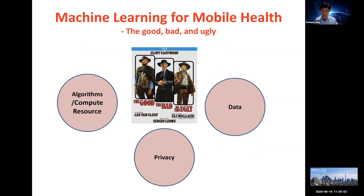Certainly, there has been a lot of work around using machine learning techniques for mobile health, and there has been significant progress in the machine learning field in terms of algorithms and how to apply AI to different fields. But today I'm going to focus on the bad and ugly aspects of AI for mobile health. Although we've seen a lot of progress, we still face a couple of challenges, which are a lack of data and data privacy.